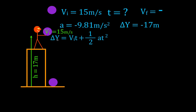The equation is: change in position equals initial velocity times time, plus one-half times acceleration times time squared. We plug in our values. Change in position is minus 17. Initial velocity is positive 15, so we have plus 15t. Acceleration is minus 9.8, so one-half of 9.8 gives us 4.9, and that term is minus 4.9t squared.